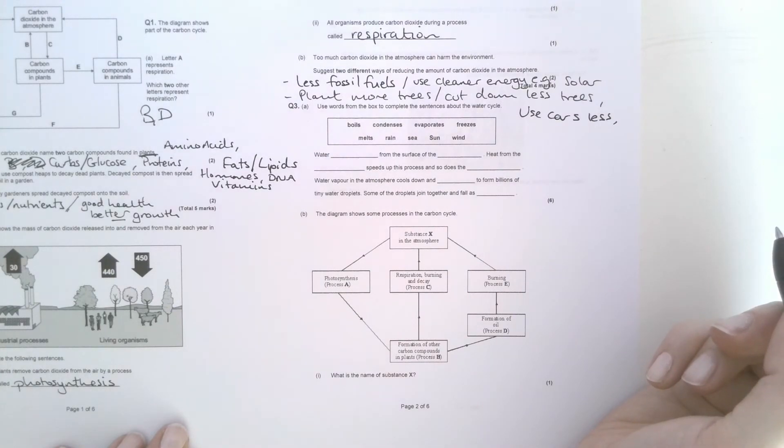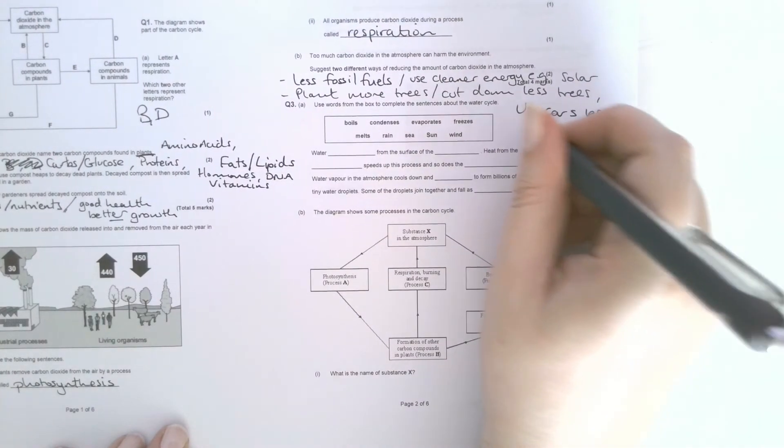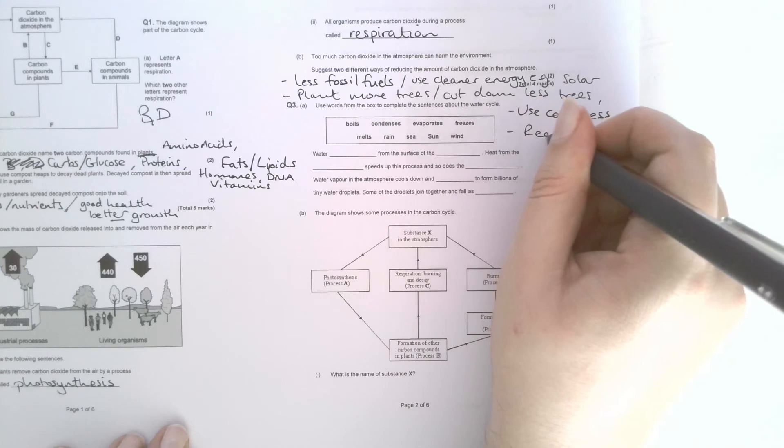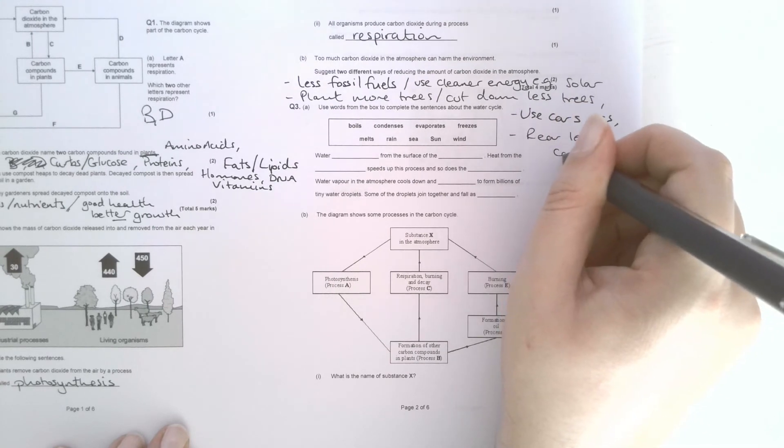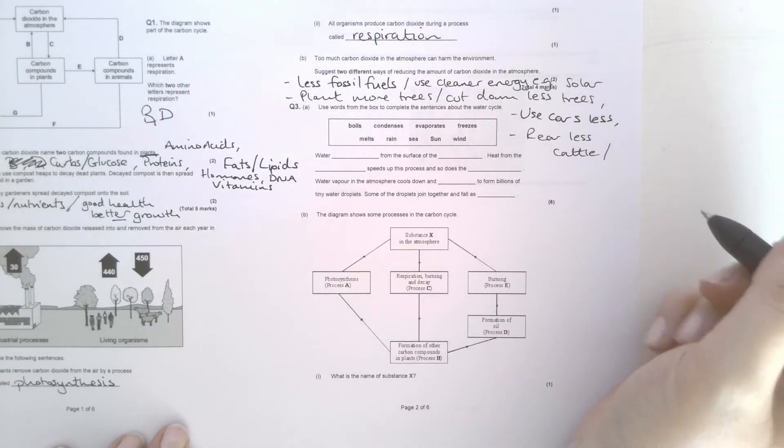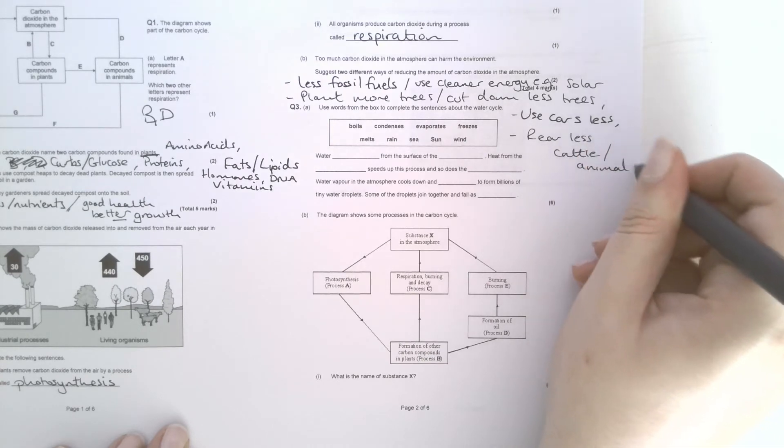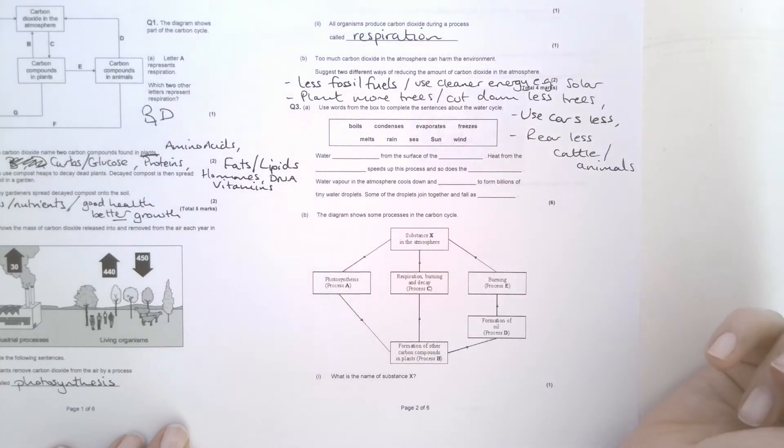You could have also had use cars less. You could have also had rear less cattle or animals because animal production for meat or other foods like eggs or milk production creates a lot of carbon dioxide.